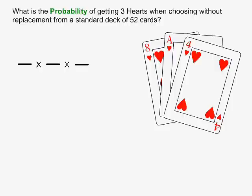The probability of the first event happening is 13 over 52, because there are 13 hearts in the deck and 52 cards in the deck. The probability of the second event happening is 12 over 51, because we are choosing without replacement, so there are 12 hearts left and 51 cards left.